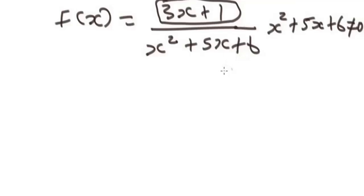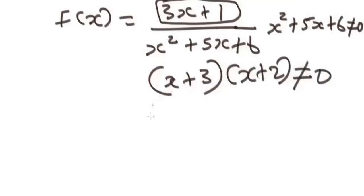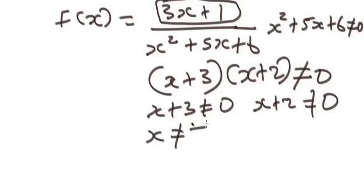So you factorize this quadratic expression. When you factorize it, you're going to have x plus three times x plus two is not equal to zero. So x plus three is not equal to zero, and x plus two is not equal to zero.